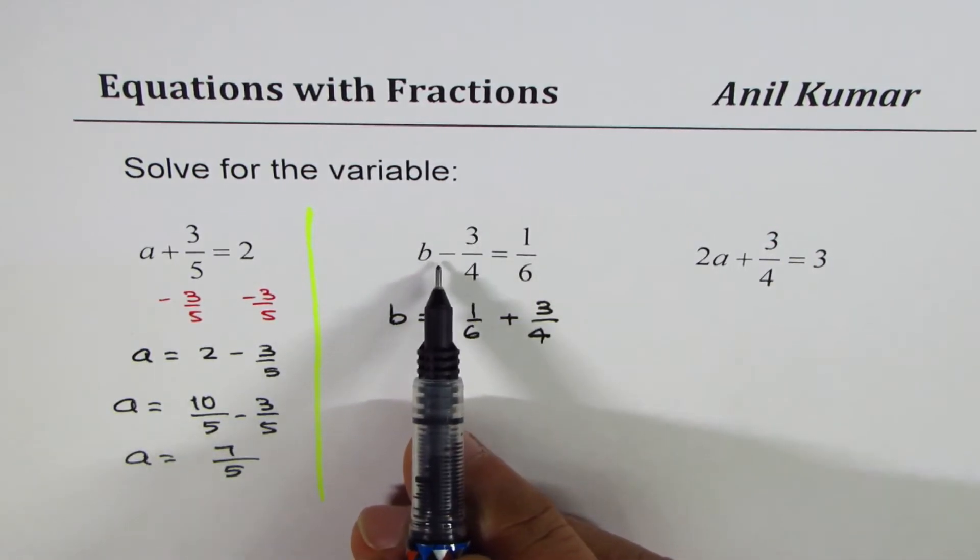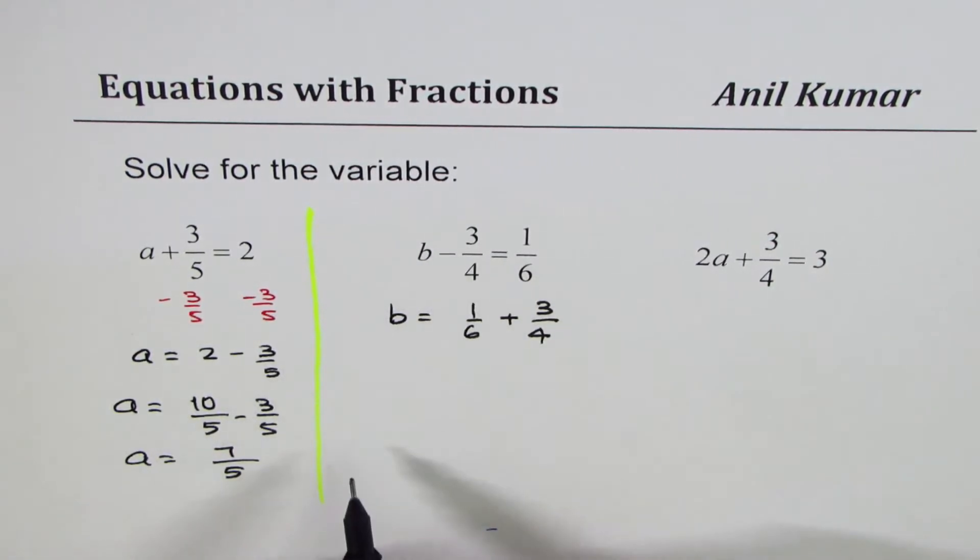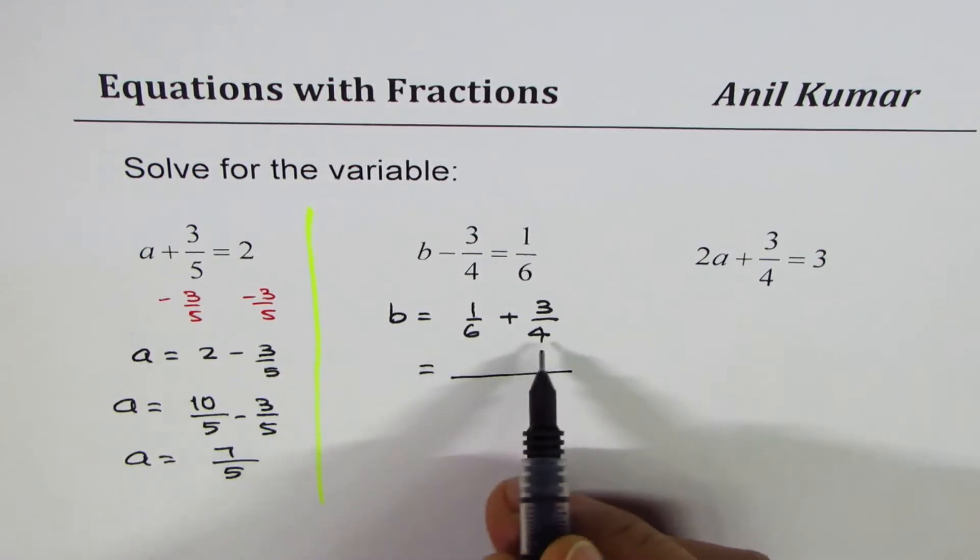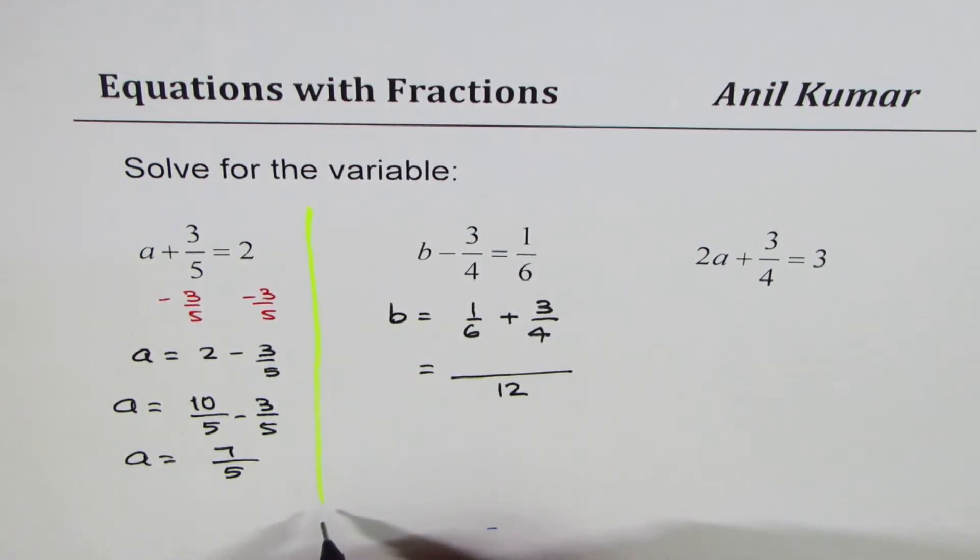On the left side, it cancels off with minus 3 over 4. They become 0 when added. Next step is to add these fractions, which we always do with common denominator. In this case, it is 12.